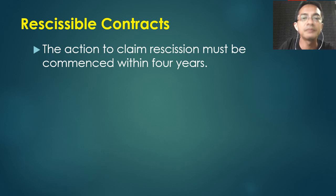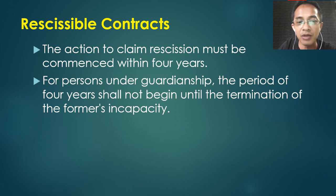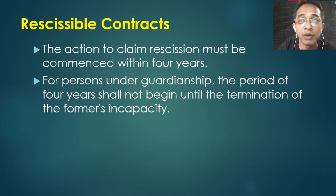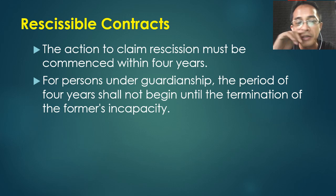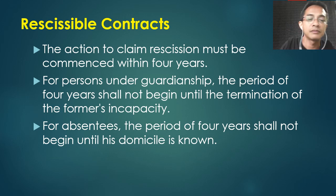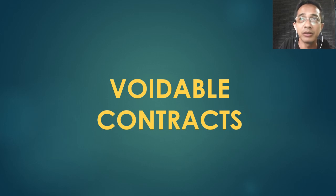The action for rescission must be commenced within four years. In case of persons under guardianship — the wards — the four years runs from the time they become 18 years old. For absentees, from the time their domicile is located. For creditors, from the time the fraud becomes known to them. For things under litigation, from the time it becomes known to the court.